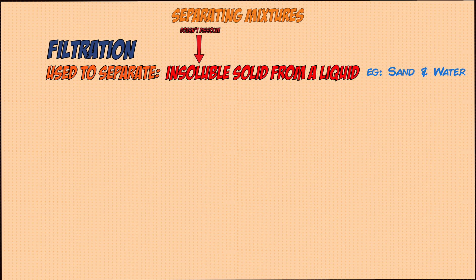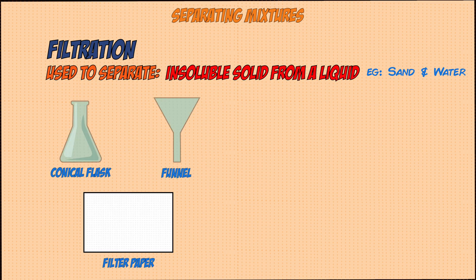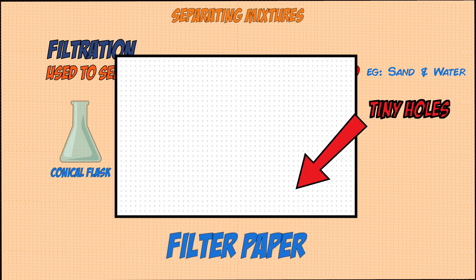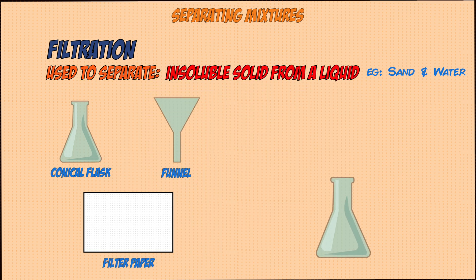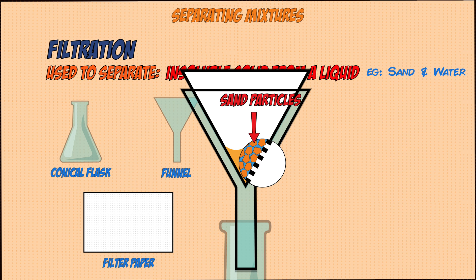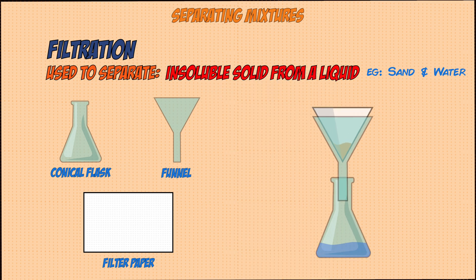An example of filtration is sand and water. The apparatus you'll need is a conical flask, a funnel, and a piece of filter paper. The filter paper is like a sieve filled with tiny holes that only allow small particles such as water through. You place the funnel on the conical flask, roll up the filter paper and place that on top. When you pour the sand and water mixture in, only the water particles pass through the tiny holes as they're small enough, whereas the larger sand particles remain on the paper.